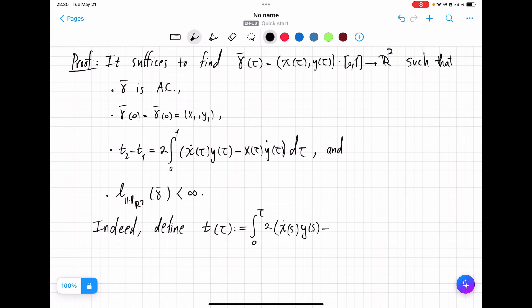minus X times Y prime. And the difference here is that we just add T1 to the end.